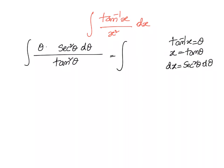Now simplify. We have theta times secant square theta by tan square theta, which is 1 by cos square theta divided by sin square theta by cos square theta, giving cosecant square theta d theta. So the integral becomes theta into cosecant square theta d theta. Now we will use integration by parts, with theta as the first function and cosecant square theta as the second function.